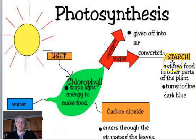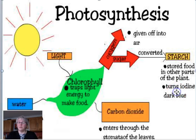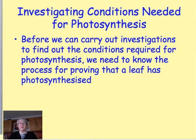The starch can be stored in other parts of the plant or in the leaf, depending on what the plant decides to do with it. You need to remember that starch can turn iodine from a brown colour to a dark blue-black colour, and that is important when we come on to investigating the conditions needed for photosynthesis.